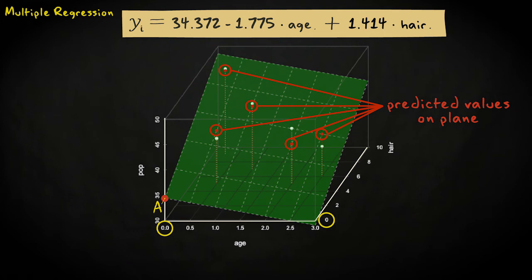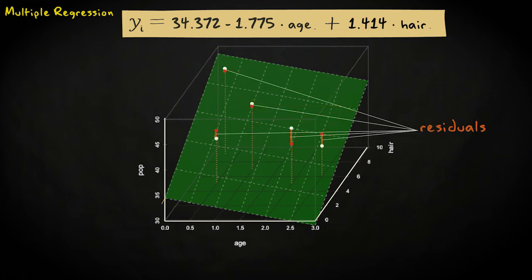Just like in simple linear regression, I can calculate the residuals, the vertical distances between the observations and the predicted values, which in this case lie on the regression plane. These residuals are used to find the intercept and regression coefficients that provide the best-fitting plane through the data points.